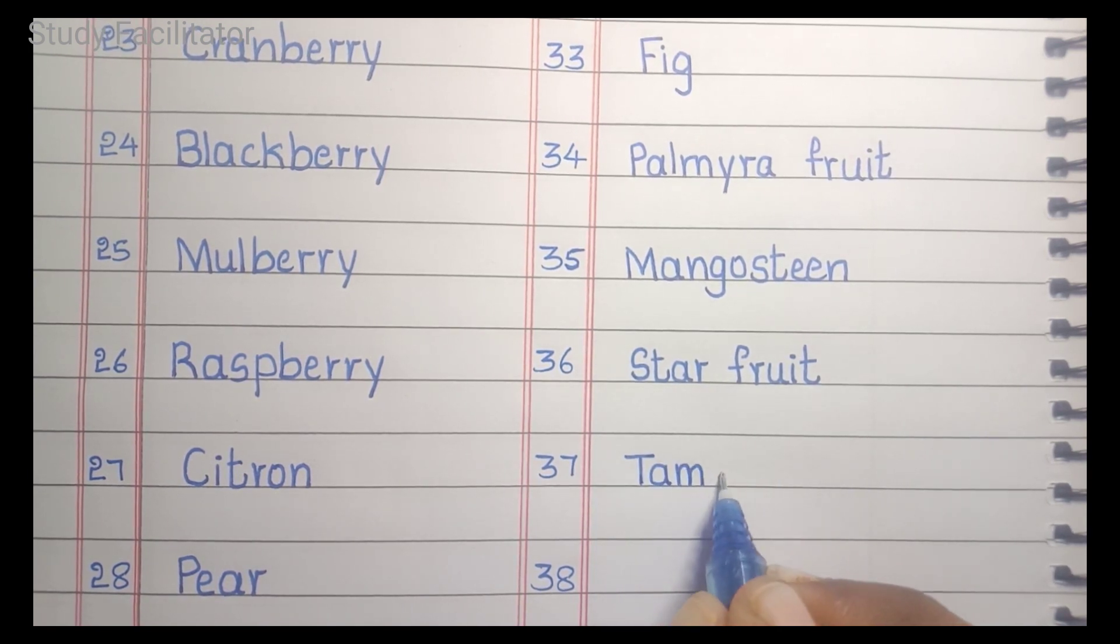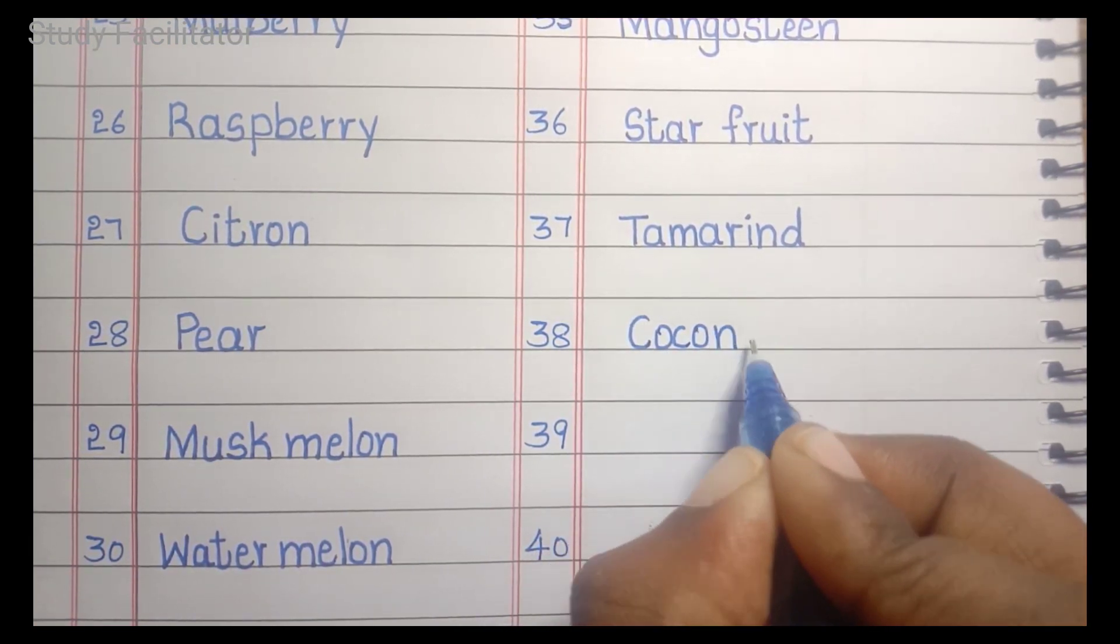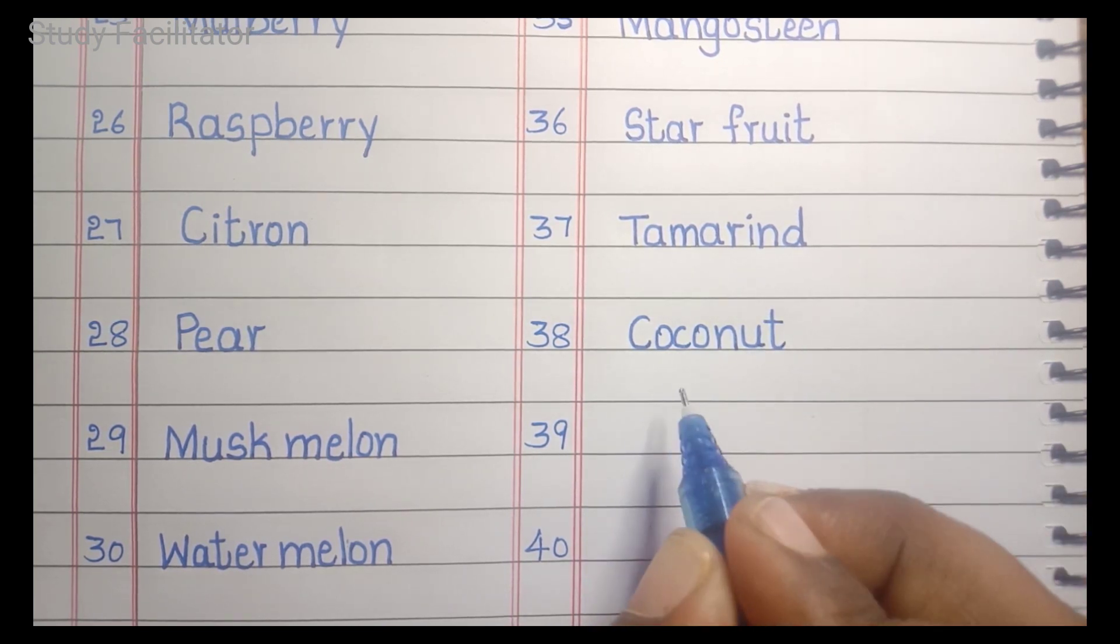Tamarind. T, A, M, A, R, I, N, D. Tamarind. Coconut. C, O, C, O, N, U, T. Coconut.